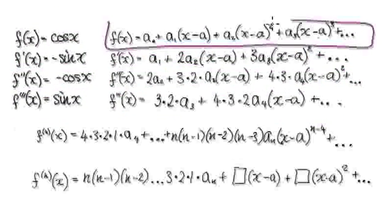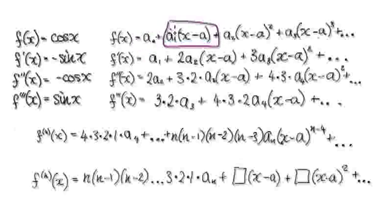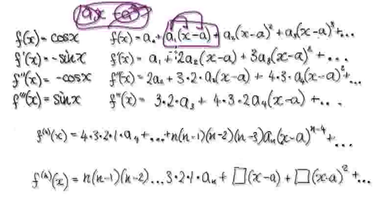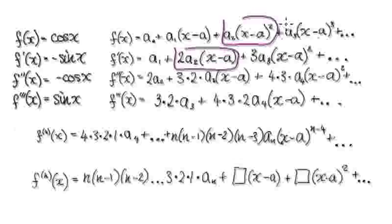So this is our general case. When you differentiate it, the a0 term doesn't contain x, so when you differentiate it, it disappears. For this block here — a1 times (x minus a) — when you differentiate it, the constant term disappears, leaving you with a1. Differentiating the next term gives you this result, and differentiating further gives you this.